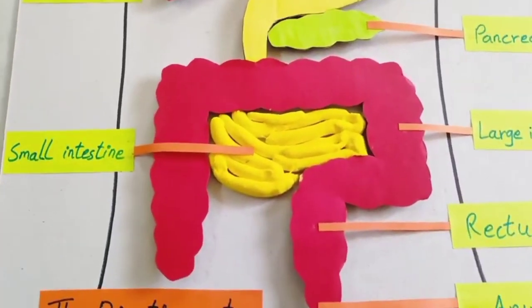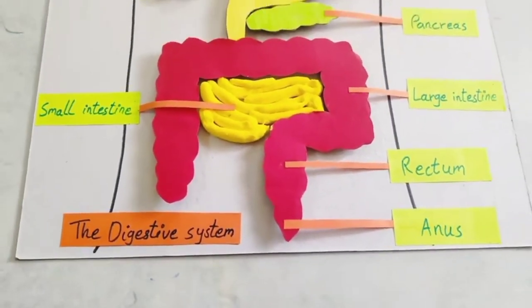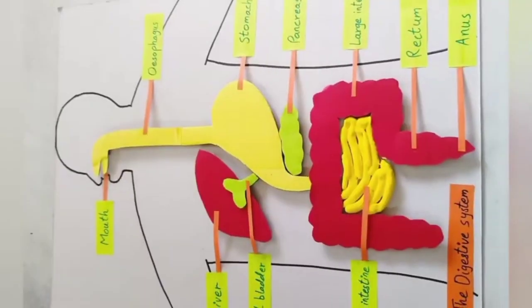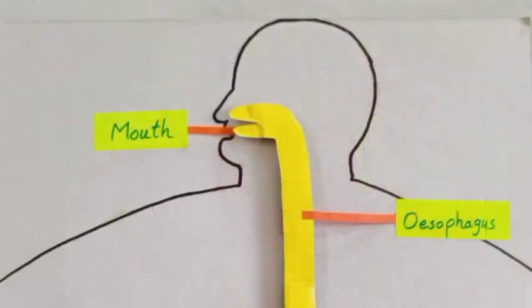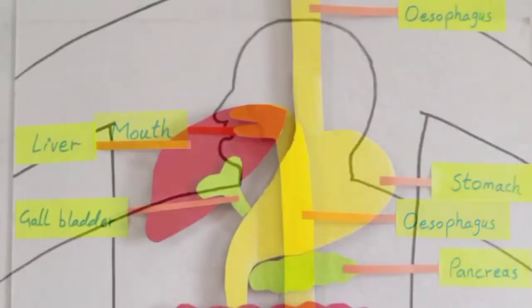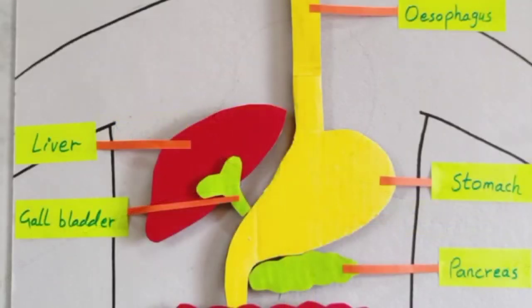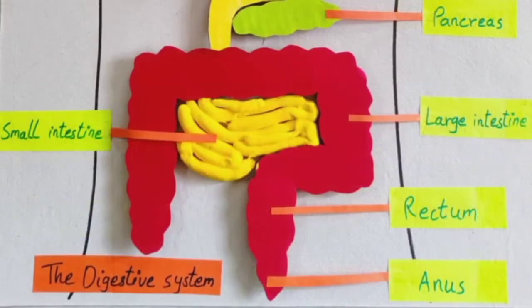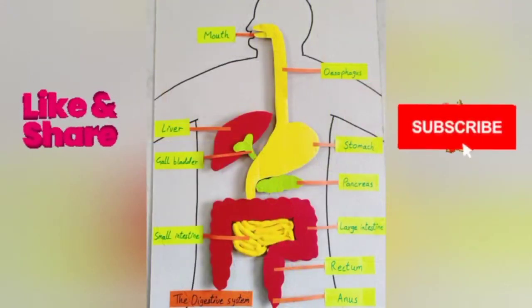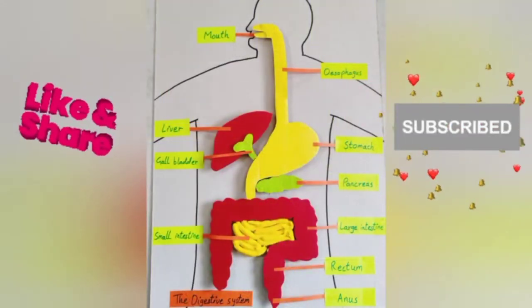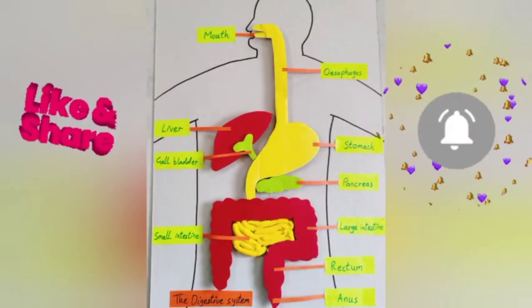That is how simple it is to make it. So thank you for watching — continue, subscribe and share. So that is how simple it is: the digestive system, human. Model of human digestive system.